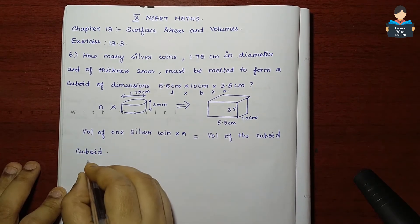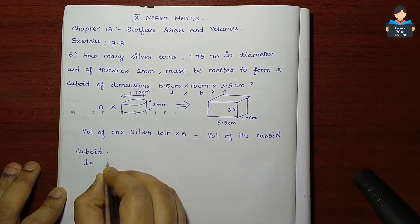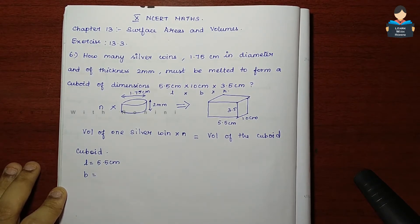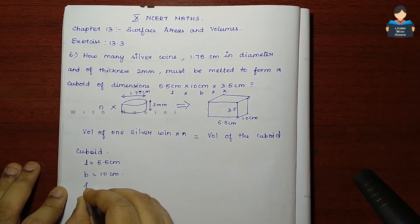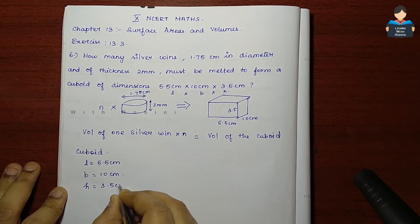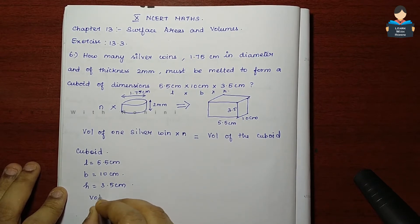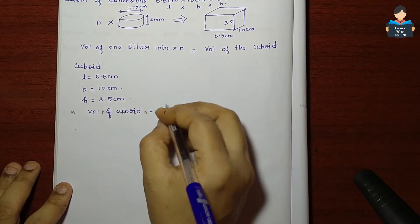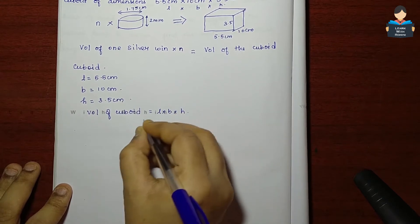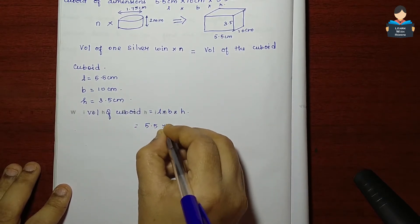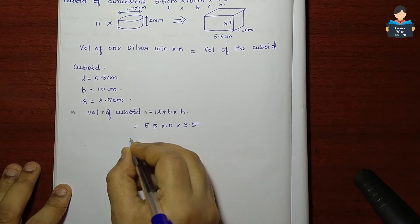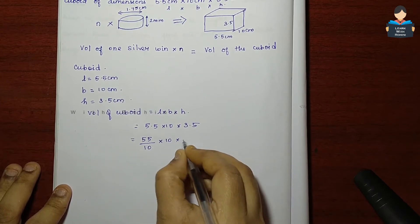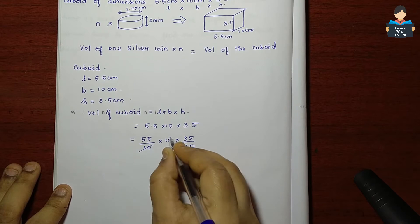L equal to 5.5 cm, breadth equal to 10 cm, and height equal to 3.5 cm. Volume of cuboid equal to L into B into H, which is 5.5 into 10 into 3.5. Now let's get rid of decimals: 55 by 10 into 10 into 35 by 10. The 10s cancel out.